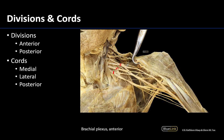Going through these: you have a posterior division of the superior trunk, a posterior division of the middle trunk, and a posterior division of the inferior trunk — and they all come together to form the posterior cord right here. That's where those posterior divisions unite to form the posterior cord.